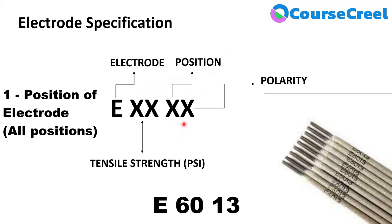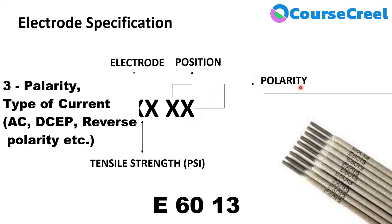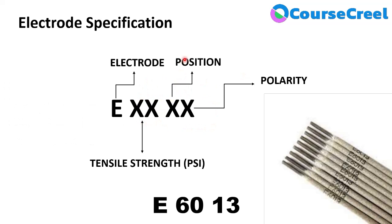The last digit — the fourth digit — represents the polarity or type of current being used. In E6013, the '3' represents the type of current: you can use AC current, DCEP current, or OCA current. So with this code we can identify the tensile strength in PSI, the applicable position, and the type of current for this electrode.